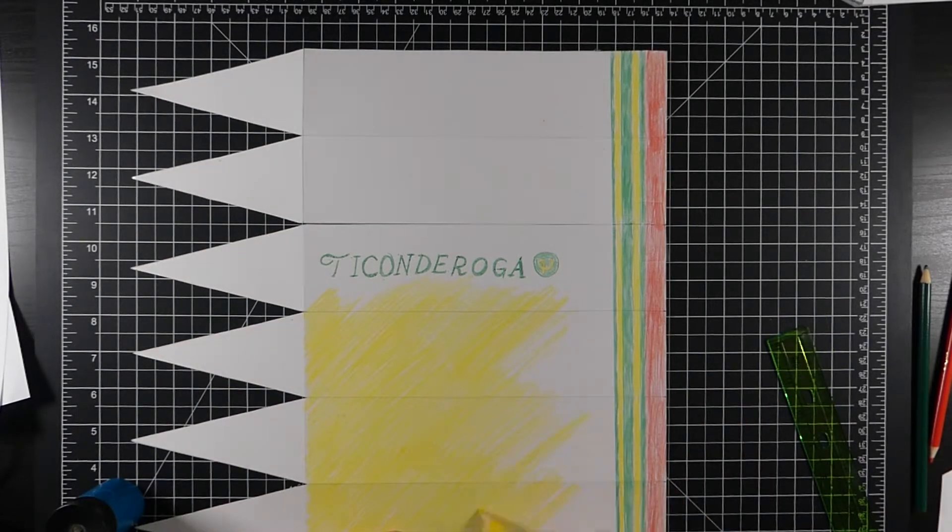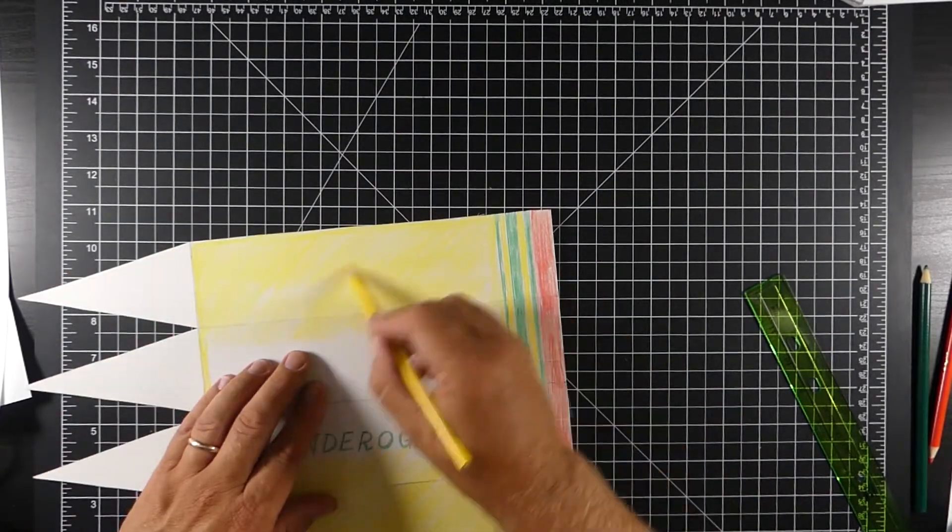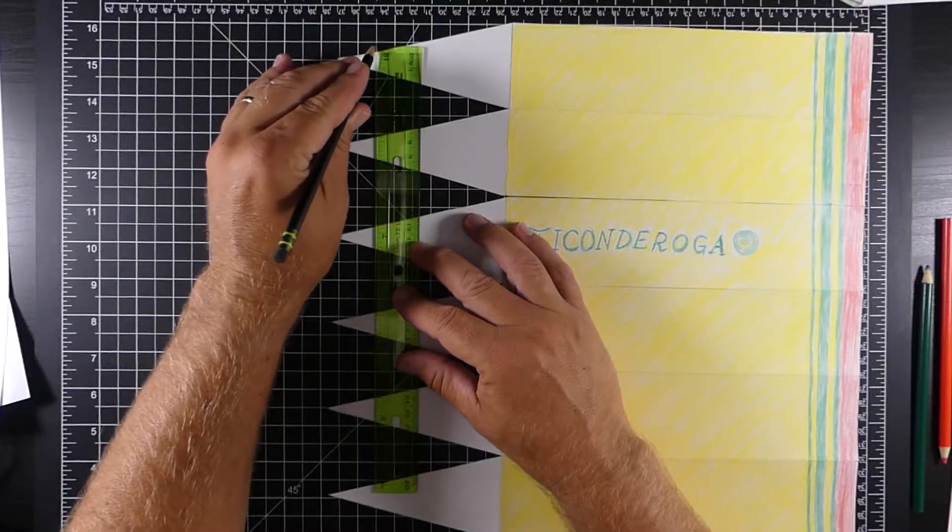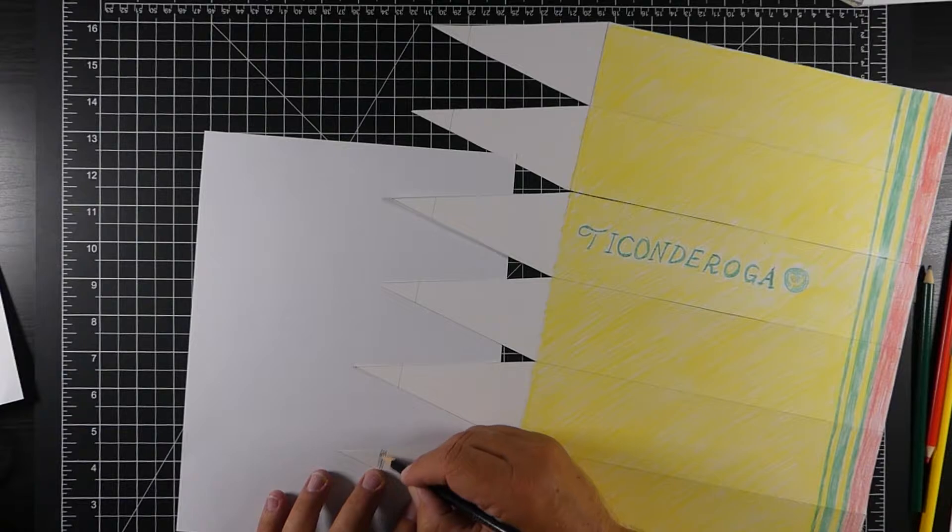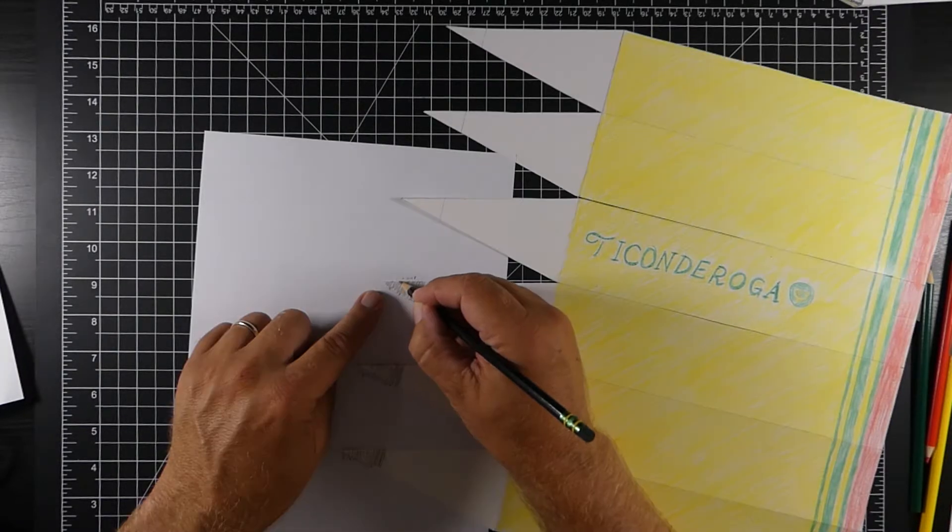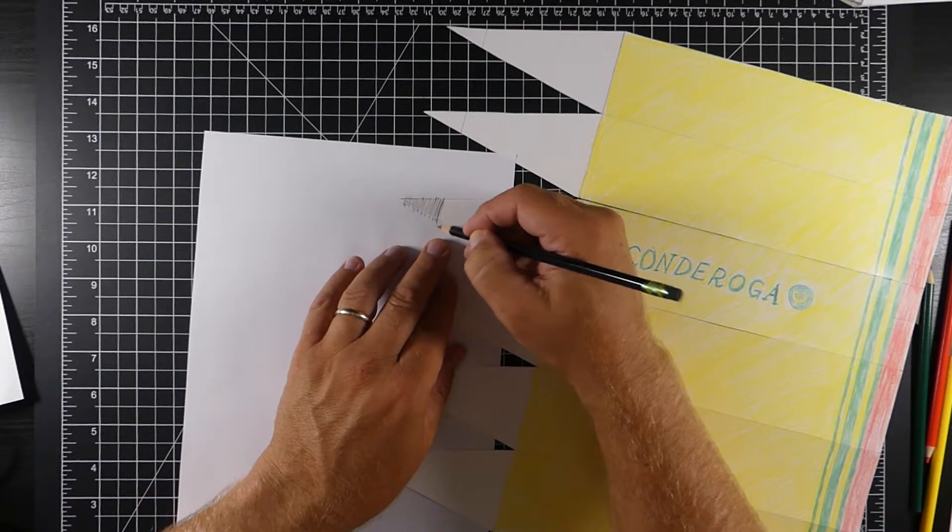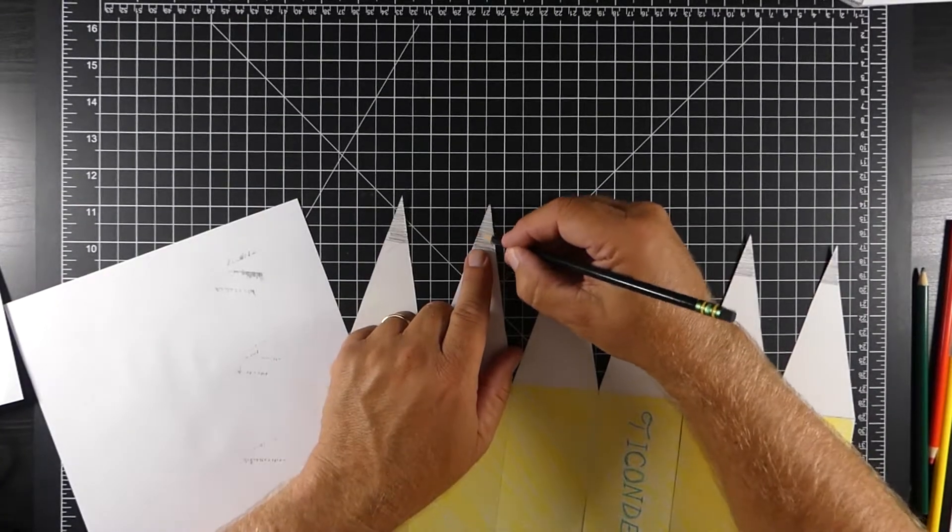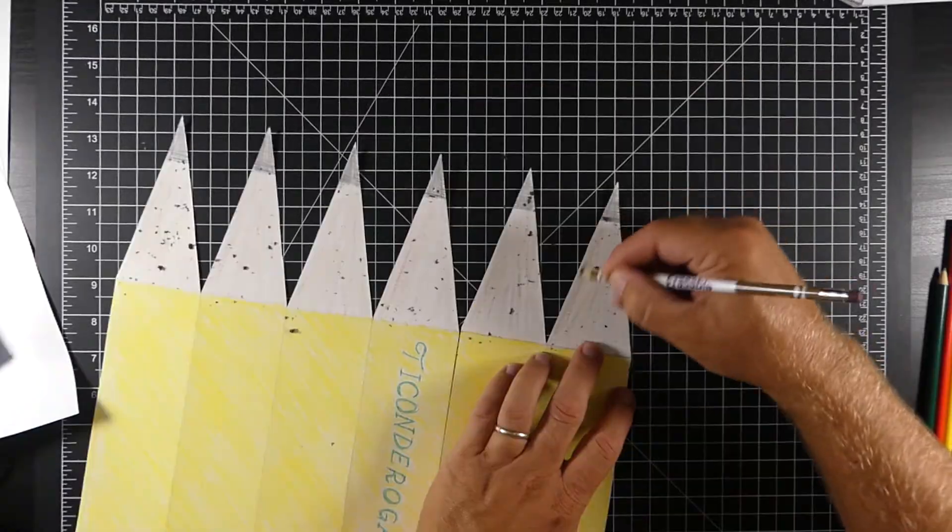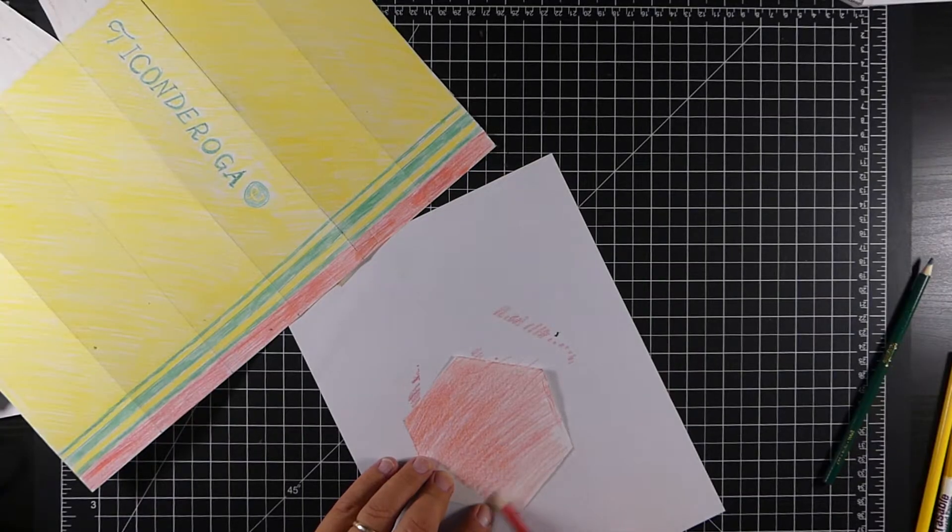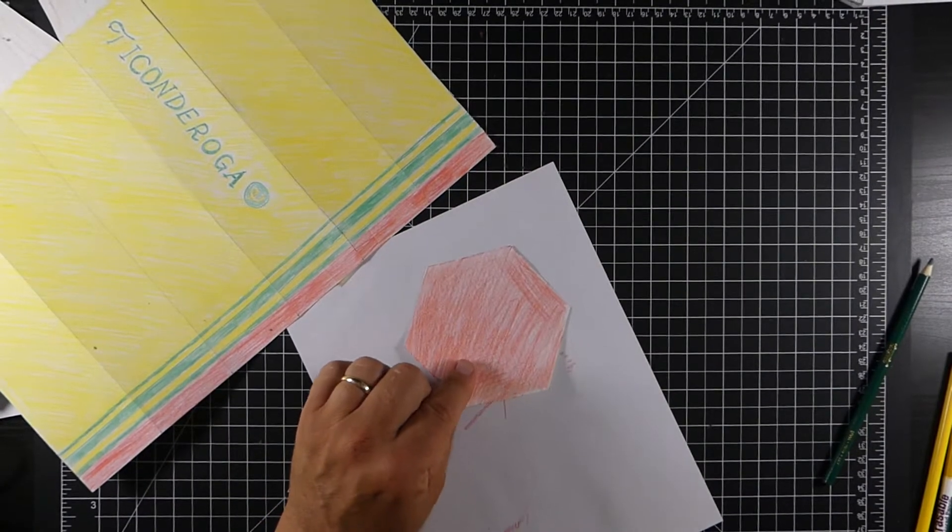So here I kind of roughly try to make the Ticonderoga look something like their logo. Color in the yellow. And you can see everything matches up nicely. To get the end of the pencil, again, I just line up my ruler. Now ideally, I should have probably went back with a black marker to make it a little darker, but that's okay. Now, I end up drawing the wood. I was trying to do a tan. It doesn't really show up well in the video.